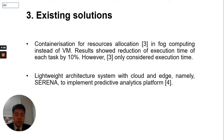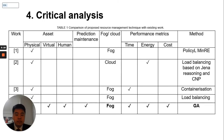The fourth solution uses a lightweight architecture system with cloud and edge, namely Serena, to implement a predictive analysis platform. Serena collected sensor data in an edge gateway and processed information in the hybrid cloud, managing deployment in Docker service and utilizing Docker load balancing to distribute tasks. Table 1 compares the existing solutions with the proposed technique, considering factors including physical asset, virtual asset, human asset, predictive maintenance, fog computing, execution time, energy, and cost.